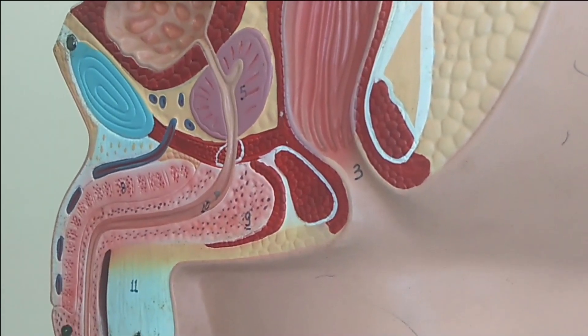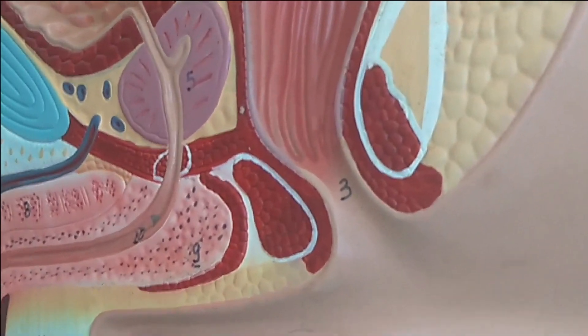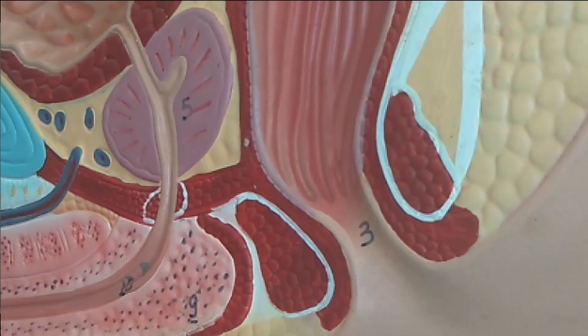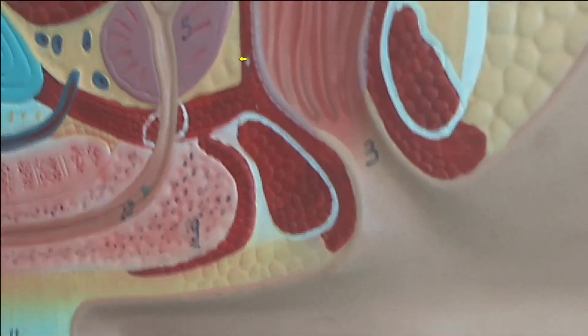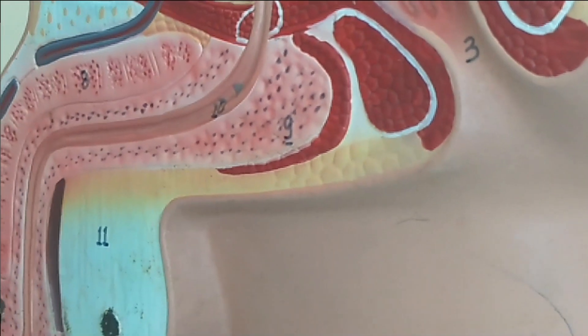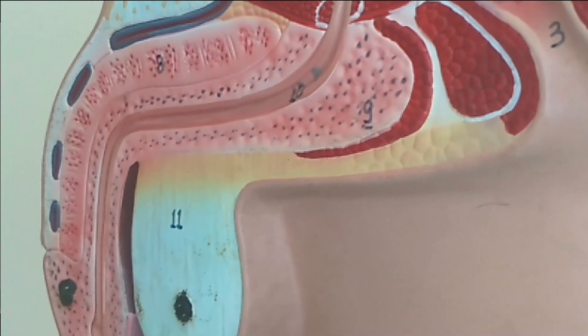The function of the vas deferens is to convey live sperm from the epididymis to the urethra. You can see the prostate gland and bulbourethral gland here, which are types of accessory glands.